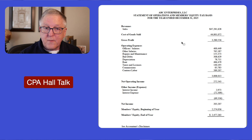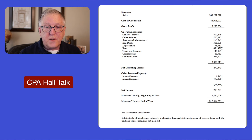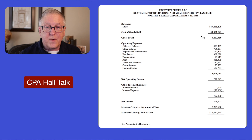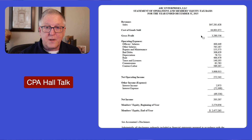Here we've got revenues, expenses, net income, and members' equity. In this example I'm not including any disclosure, so I don't have a selected disclosure. Notice how simple this tax basis presentation is — you've got just the balance sheet, then just the income statement, and no disclosures, no supplementary information, no cash flow statement. So this is about as easy as it gets.